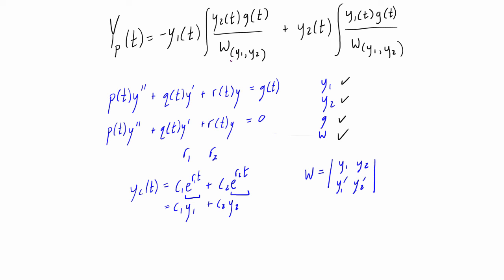But just remember that this method, variation of parameters, is applicable to a much wider set of possibilities that we can solve for the form of g(t). But you'll see when I go over the next couple examples that sometimes just integrating here is like a beast, and if you're able to use another method, for example undetermined coefficients, sometimes with certain situations it's easier.